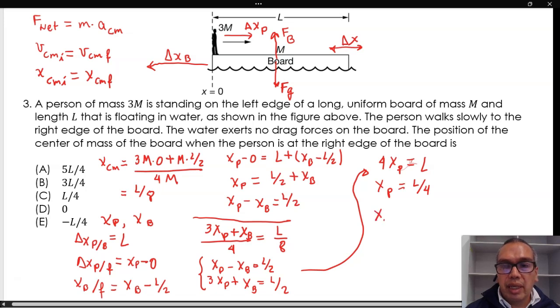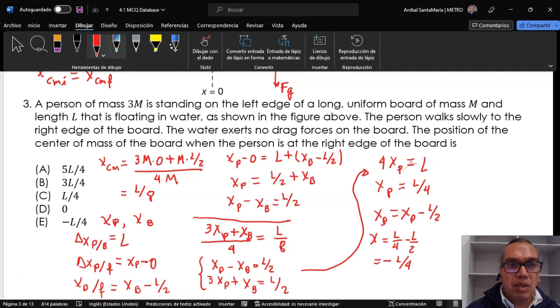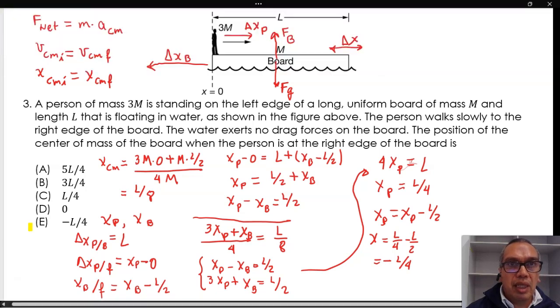From equation 1, we get xb equals xp minus l over 2. So xb equals l over 4 minus l over 2, which is equal to negative l over 4. This corresponds to option E.